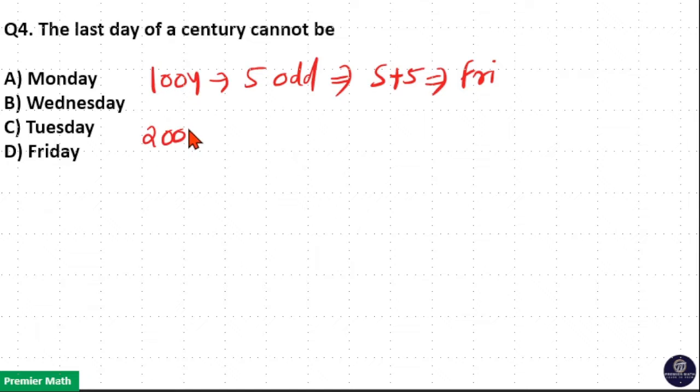Again, 200 years contains... If 100 years contains 5 odd days, 200 years contain 5 into 2, 10. But 10 by 7 will give you remainder 3. So in 200 years, there are 3 odd days, which means Sunday plus 3 will give you Wednesday. That is, last day of 2nd century, Wednesday.